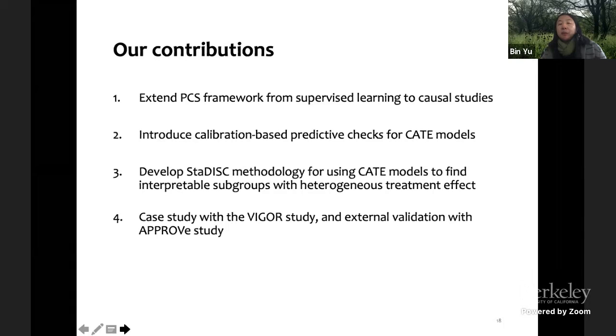We depend on this particular methodology because we need to use CATE models, we have 17 of them actually, and many different ways to perturb the data to find stable and interpretable and predictive groups for heterogeneous effect. We found six subgroups. After we submit the first version of the paper, we had access to another study.